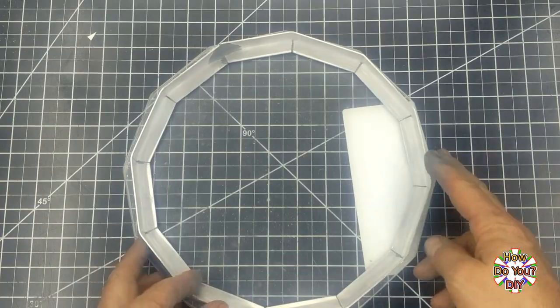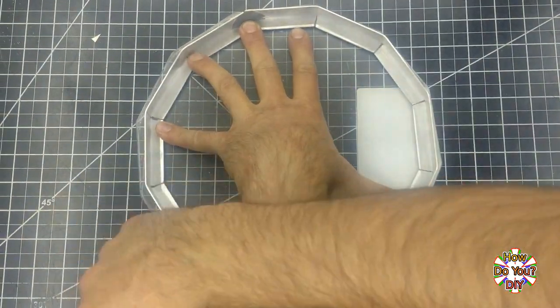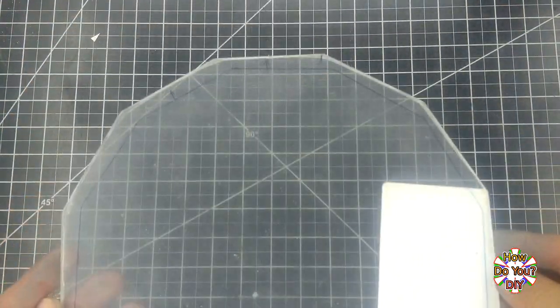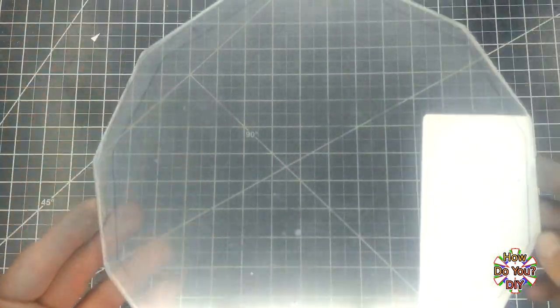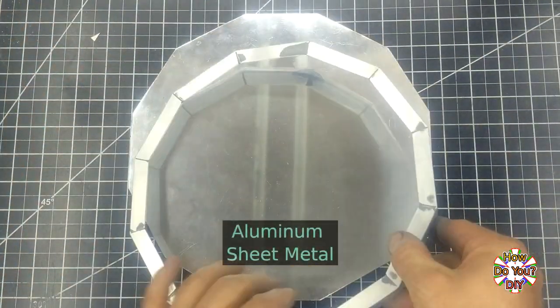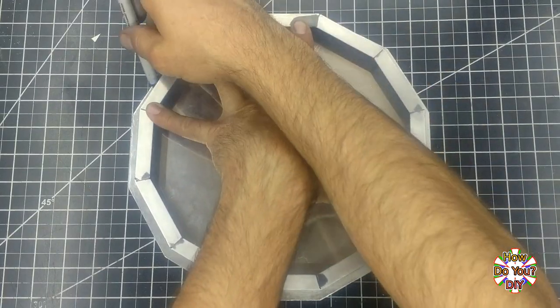When cutting the plastic after tracing the frame's shape onto it, you need to cut a bit on the inside of the line to adjust for the thickness of the aluminum frame. You also need to do the same when cutting the sheet metal.